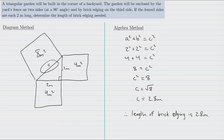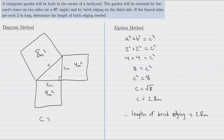Since the third square is built on the hypotenuse, its area is found by adding the two smaller areas: 4 meters squared plus 4 meters squared gives us 8 meters squared. To find the length of side C, we figure out what number multiplied by itself gives 8, using the square root. C equals the square root of 8, which is approximately 2.8 meters. Therefore, the length of brick edging is 2.8 meters.